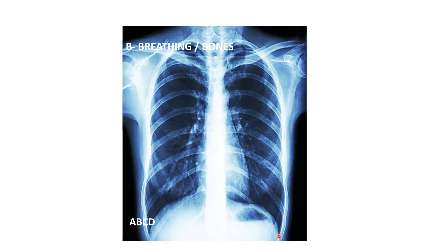Below the shadow of the left hemidiaphragm you can see a dark shadow, which is normal. This dark shadow is due to air present in the fundus of the stomach, which is located below the left dome of the diaphragm. The shadow of the dome of the diaphragm forms an angle with the shadow of the rib. This angle is known as the costophrenic angle — costo meaning rib, phrenic meaning diaphragm — present on both sides.